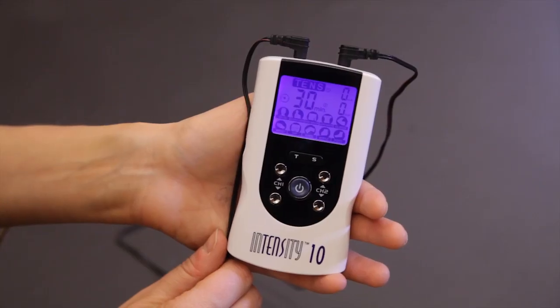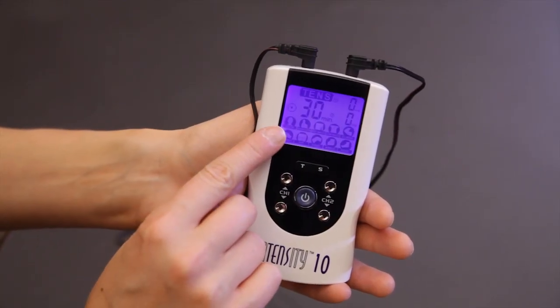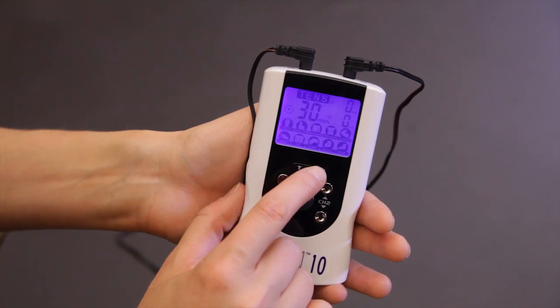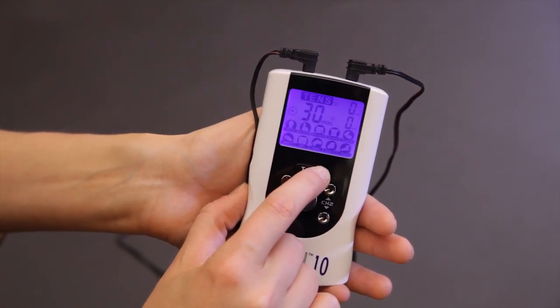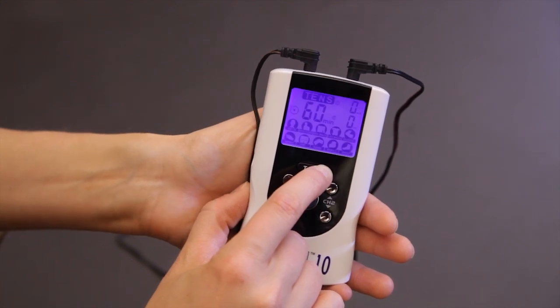To select the appropriate mode for the area being treated, press the S button to scroll through each mode. Each mode will flash on and off, identifying the current mode selected.